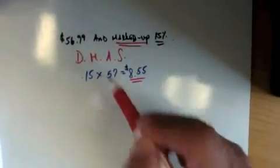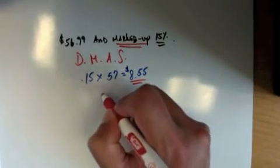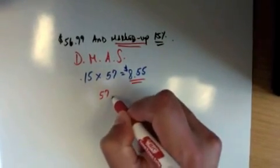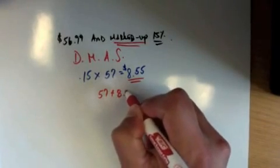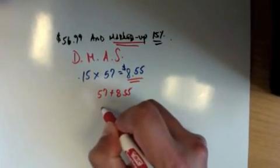Now, because it's a marked up price or value, we're going to add. So we're going to add 57 plus $8.55. And remember, when you're doing this, make sure you put that double zero over there.